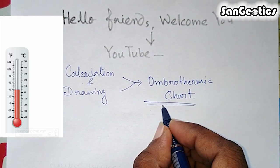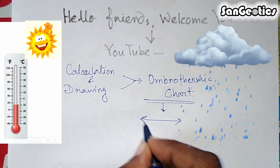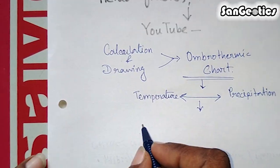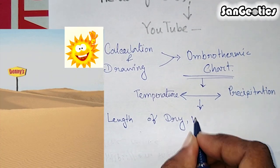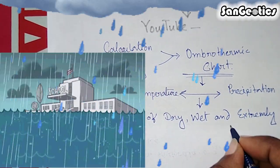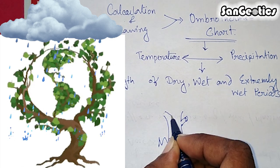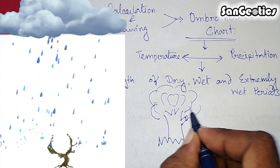Ombrothermic chart is a technique that allows to establish the relationship between temperature and precipitation and to determine the length of dry, wet, and extremely wet periods, and also wet periods that are favorable for plant growth.